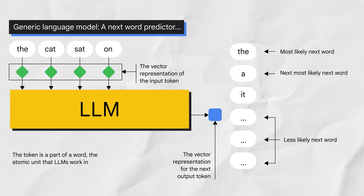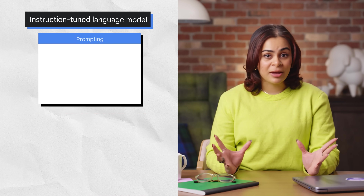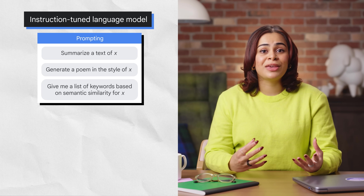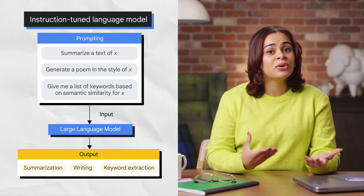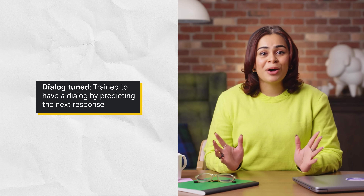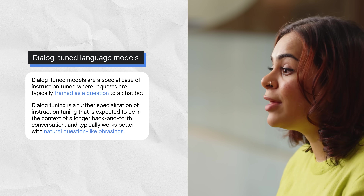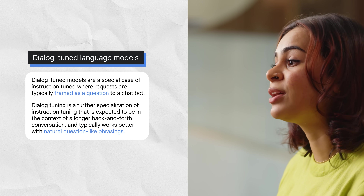Next, we have instruction tuned models. This type of model is trained to predict a response to the instructions given in the input — for example, summarize a text of X, generate a poem in the style of X, give me a list of keywords based on semantic similarity for X, or classify text into neutral, negative, or positive. Finally, we have dialogue tuned models. This model is trained to have a dialogue by predicting the next response. Dialogue tuned models are a special case of instruction tuned where requests are typically framed as questions to a chatbot, expected in the context of a longer back-and-forth conversation, and typically work better with natural question-like phrasings.